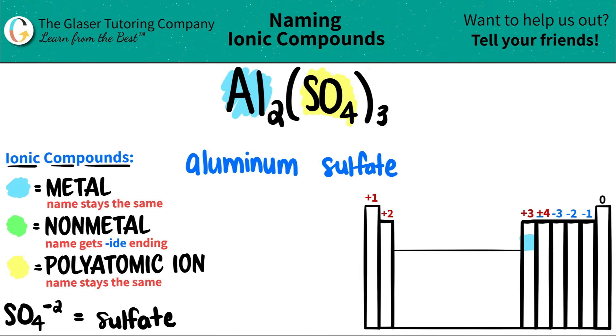So now just do a double check. Does aluminum need a Roman numeral in the middle? Well, even though it's a post-transitional metal, it's a transitional metal...